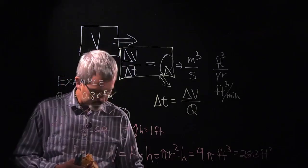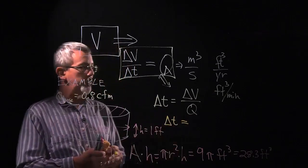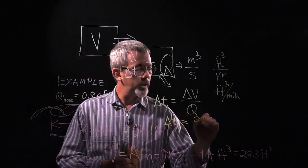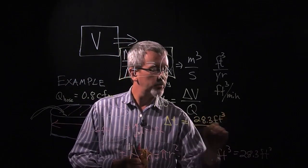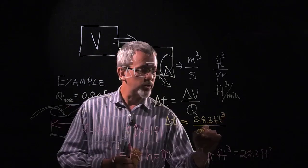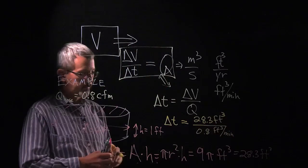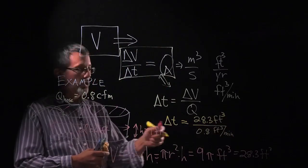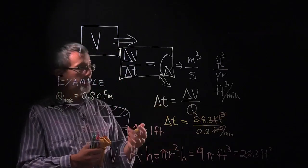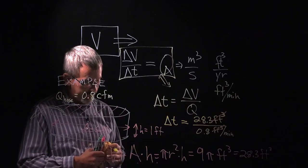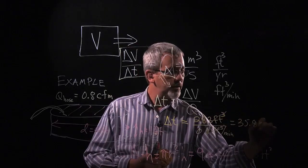If I plug that in here, the amount of time it takes me to fill the pool is going to be equal to that 28.3 cubic feet divided by my flow rate of 0.8 cubic feet per minute. Notice the cubic feet cancels out. The minute, since it's the denominator in the denominator, goes up to the top and we get our answer in unit of minutes, and we get an answer of 35.8 minutes.